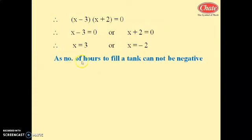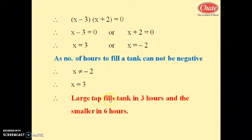Since the number of hours to fill a tank cannot be negative, x equals minus 2 is rejected. Therefore x equals 3. The larger tap fills the tank in 3 hours and the smaller tap fills the tank in x plus 3 equals 6 hours. Thank you.